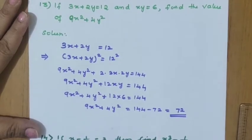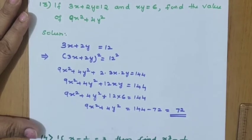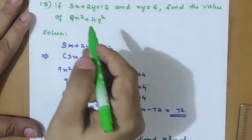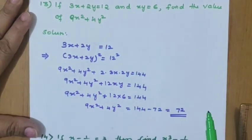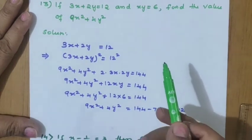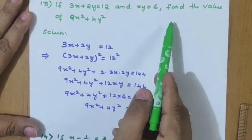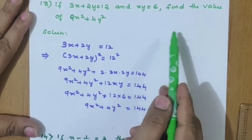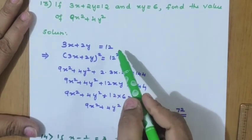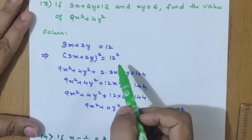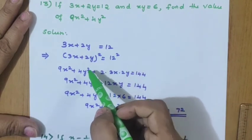Good morning children. Practice paper 3, we are doing already. 12 questions we have completed, now the 13th question: if 3x plus 2y equals 12 and xy equals 6, find the value of 9x squared plus 4y squared.